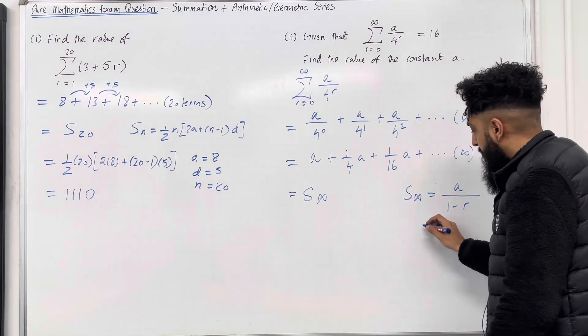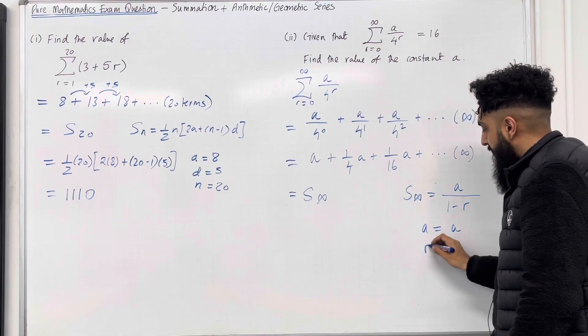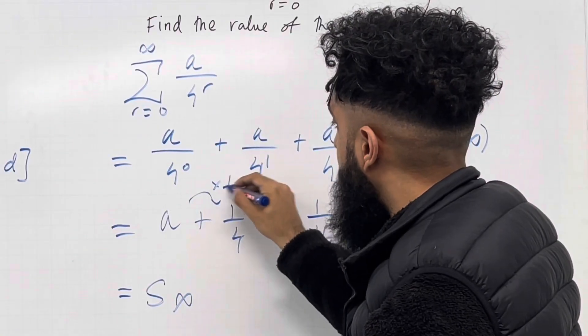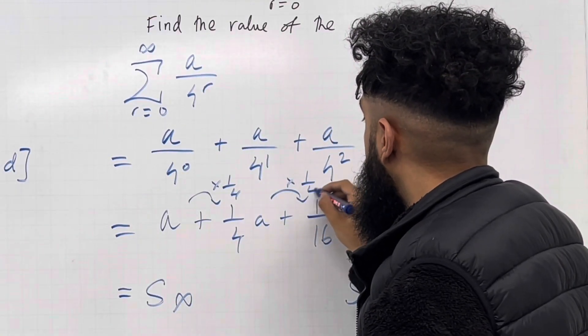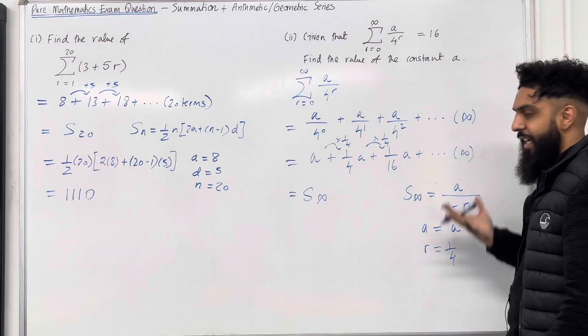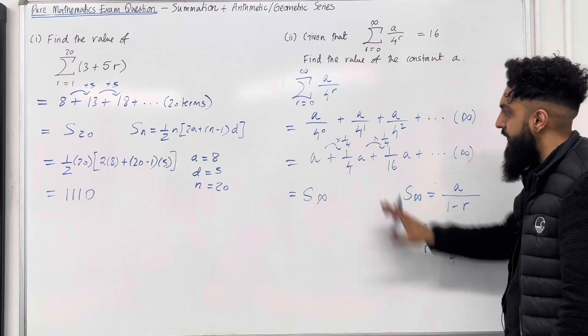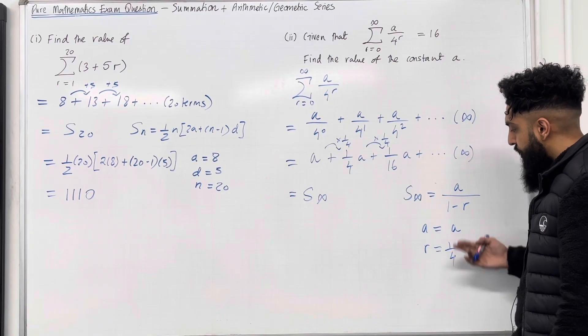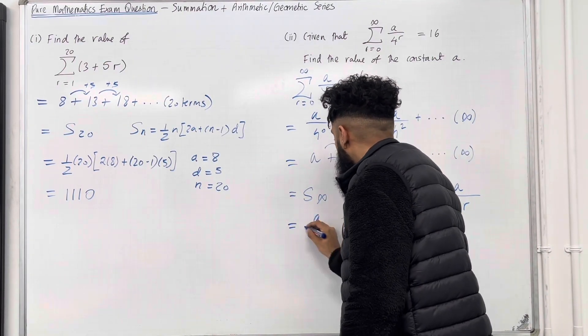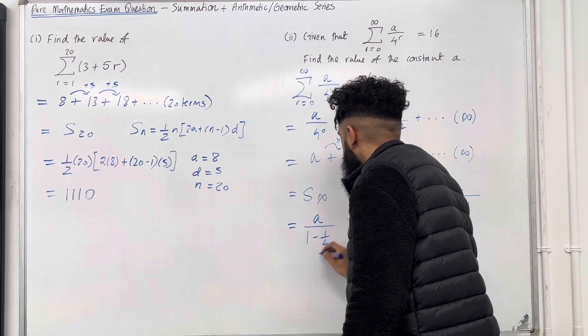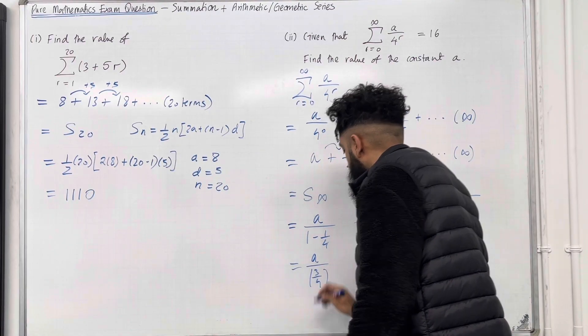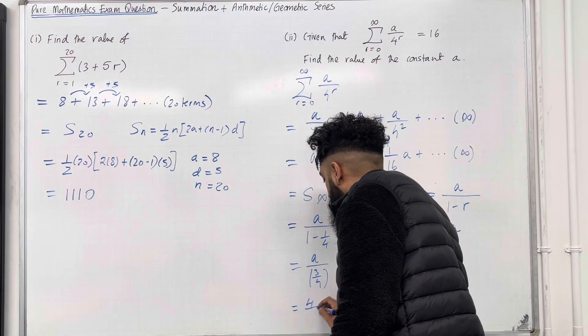So the s infinity formula for a geometric series is a over 1 minus r. Now, over here, the first term a is just a. The common ratio r is a quarter. Each time, we are multiplying by a quarter, as you can see. Now, a quarter is between minus 1 and 1, so s infinity indeed exists. So we can actually calculate s infinity for this summation. Substitute a equal a and r equal a quarter into the s infinity formula. So this gives us a over 1 minus a quarter. Right, so what we have over here is a over 3 over 4, which simplifies to 4 over 3a.